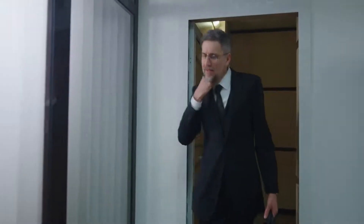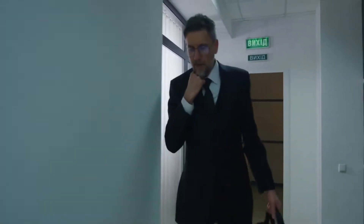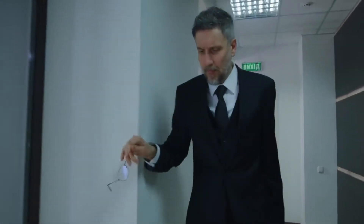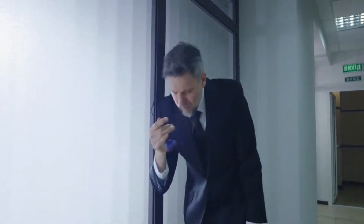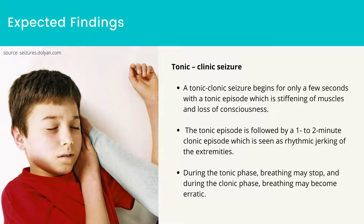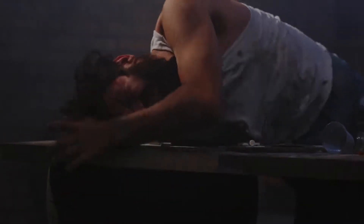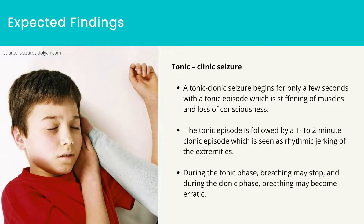Expected findings — generalized seizures: both brain hemispheres are involved in generalized seizures. Auras can precede generalized seizures, including alteration in vision, smell, hearing, or emotional feeling. There are five different forms of generalized seizures. Tonic-clonic seizure: a tonic-clonic seizure begins for only a few seconds with a tonic episode, which is stiffening of the muscles and loss of consciousness. The tonic episode is followed by a 1–2 minute clonic episode, which is seen as rhythmic jerking of the extremities. During the tonic phase, breathing may stop, and during the clonic phase, breathing may become erratic.